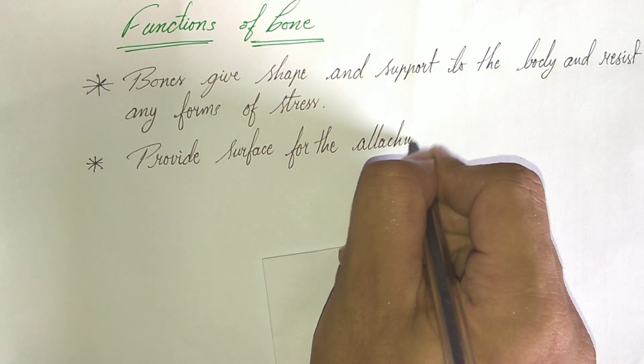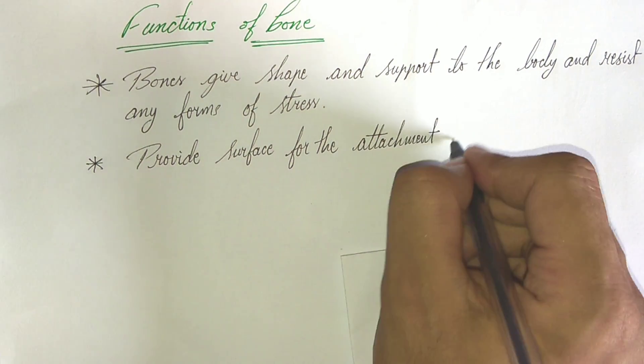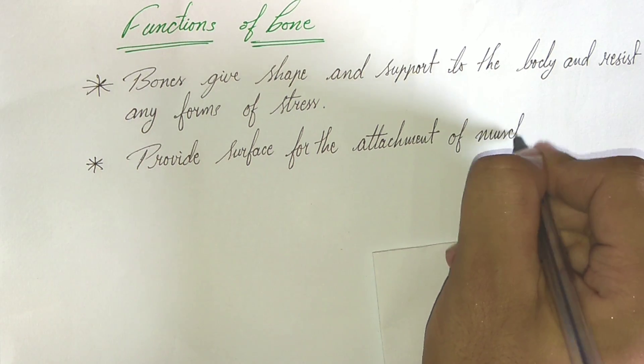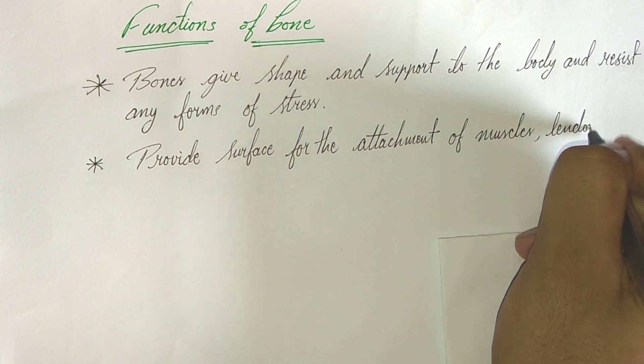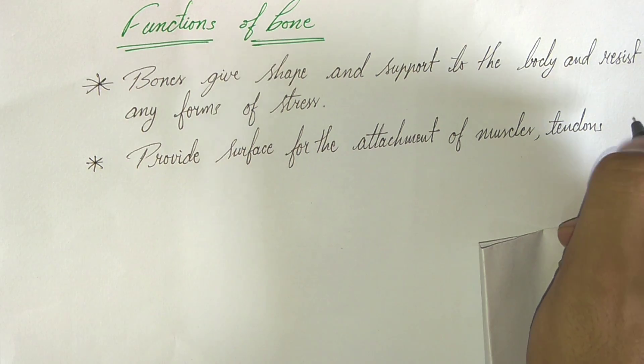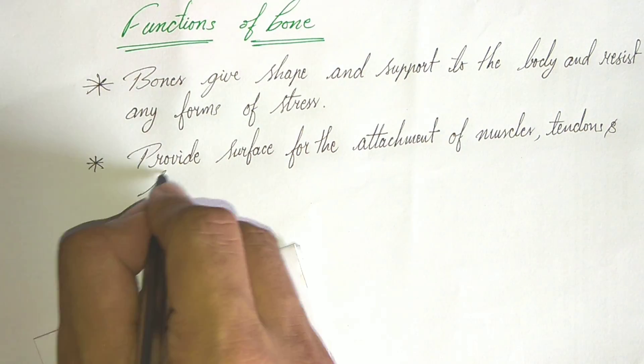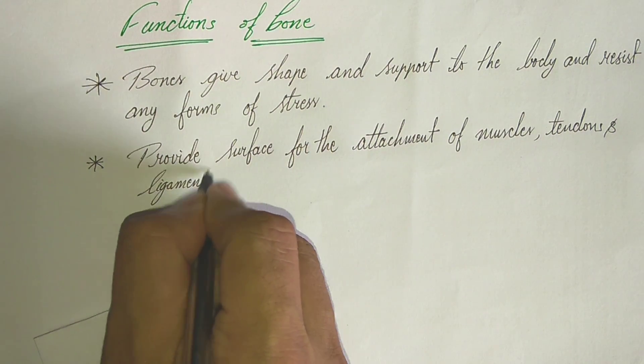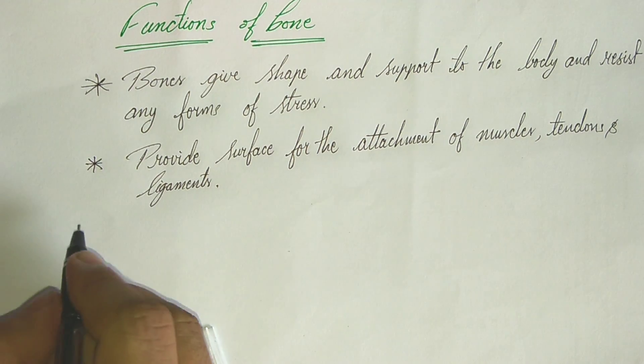And second function is provide surface for the attachment of muscle, tendon, ligaments. So all our muscles, tendon and ligaments are attached to the bones only.